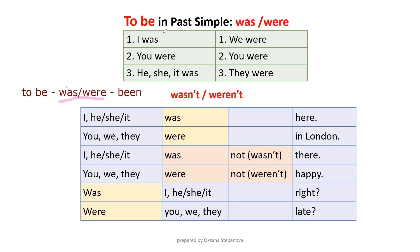'Was' is used for singular form — when we talk about one person or one object. 'I' is singular: I was. 'He', 'she', 'it' was — singular form. However, some people say 'you was' — I've heard it many times — but still it is 'were' for 'you' in both singular and plural. It is the same: you were. For plural, we show many people or things: we were, you were (plural), they were.